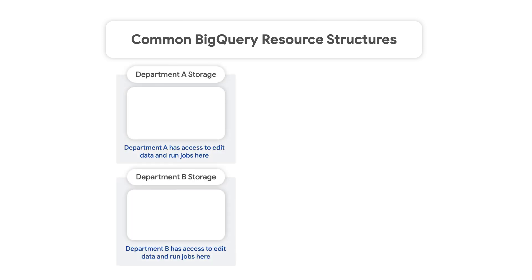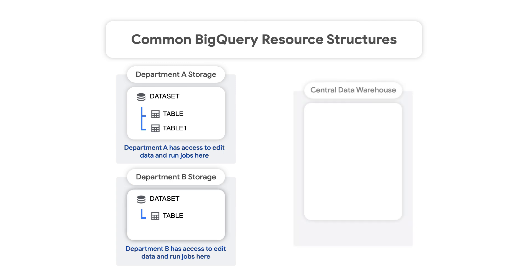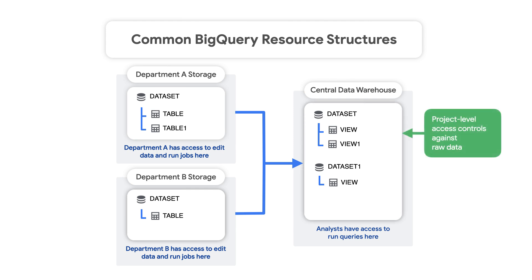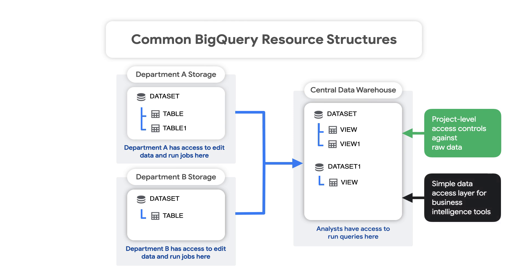Another option is to do the reverse, where each department creates and manages their own storage project to house their raw data. Aggregate tables or transformations of the raw data are then stored in a centralized data warehouse project, where analysts can read and query the data. This structure allows for project-level access controls against raw data, and offers a simple data access layer for connecting business intelligence tools to BigQuery.